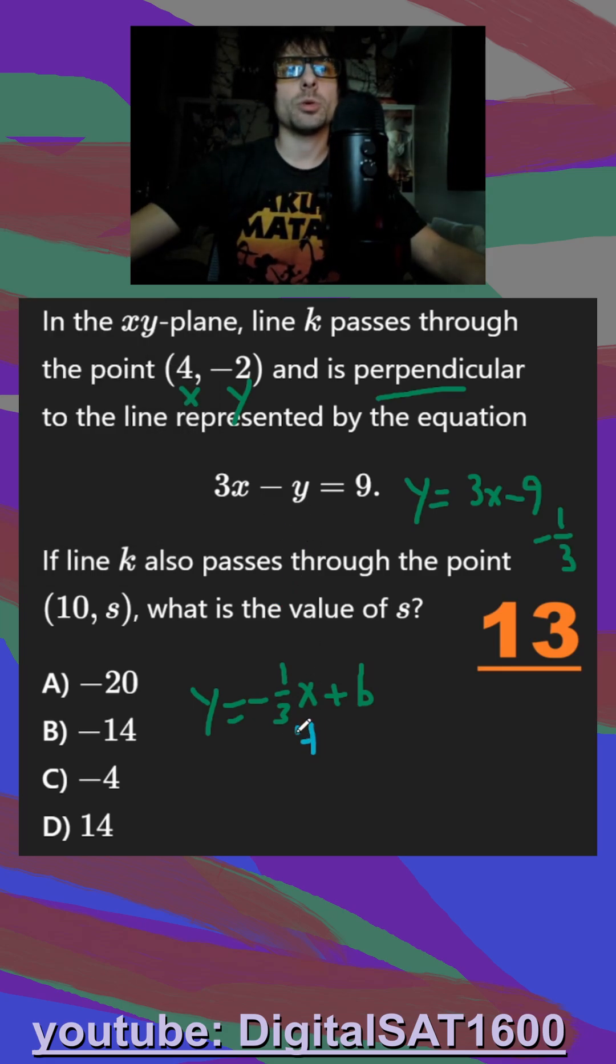I can say, okay, well, when my x is 4, my y is negative 2. So negative 2 is equal to negative 4 thirds plus b, or b is just equal to negative 2 plus 4 thirds. And I'm sure that's going to come in handy in a little bit.